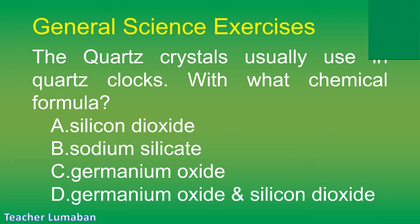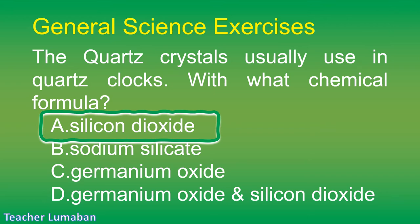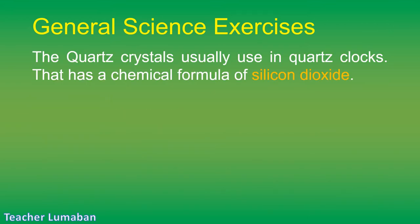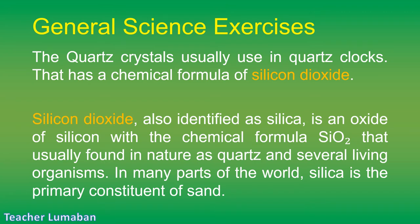The correct answer is Letter A: silicon dioxide. The quartz crystals usually used in quartz clocks have a chemical formula of silicon dioxide (SiO₂). Silicon dioxide, also identified as silica, is an oxide of silicon usually found in nature as quartz and in several living organisms. In many parts of the world, silica is the primary constituent of sand.